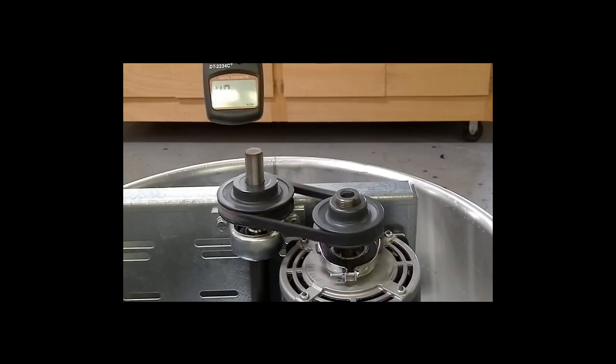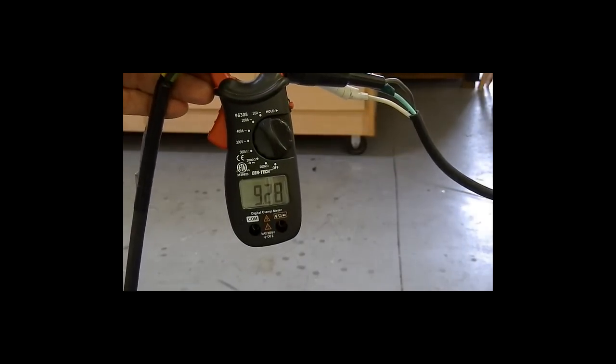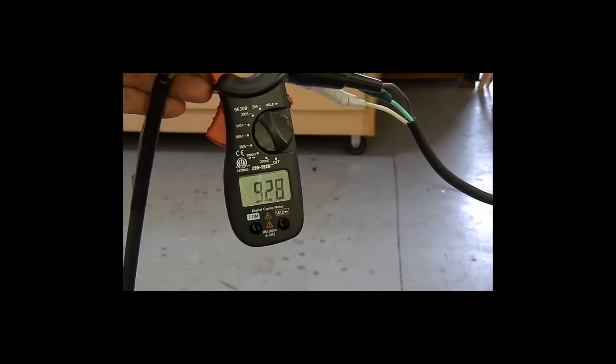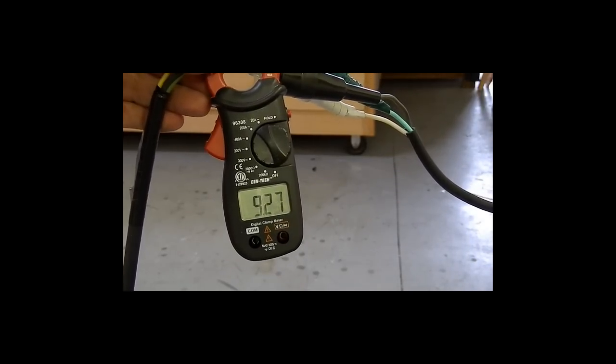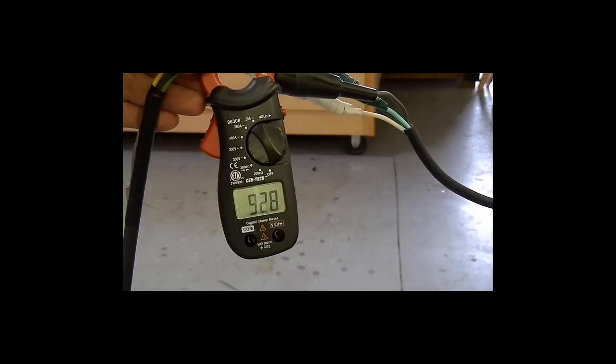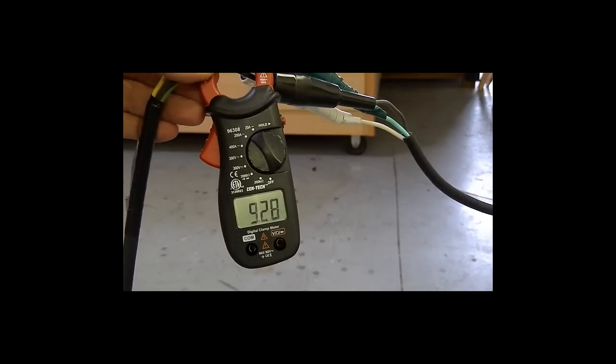We see that the RPM is 1,491, pretty much book value. Checking the amp draw on the fan we see it is 9.28 which is well within the motor's capability.